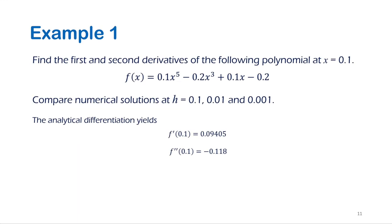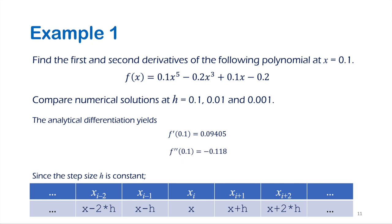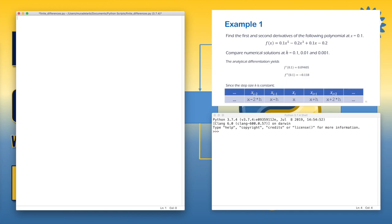In this example, we want to find the first and second derivatives of the polynomial at x equals 0.1, and compare the accuracy of the solution at different values of step size. Before starting the coding, we should know how to represent the notation of x_i, x_i plus 1, or x_i minus 2 in computer code. Since the step size h is constant, we can represent x_i by x itself, and the values of the next steps in the positive direction by adding h multiplied by the number of steps. The same thing can be done for the negative direction. Now let's begin the solution by defining the function.